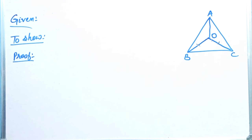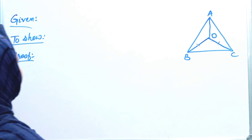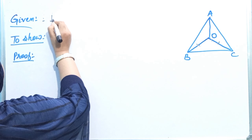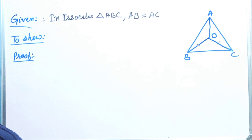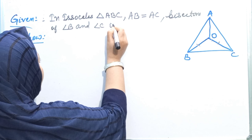So how do we prove it? First of all, we will write it down. In isosceles triangle ABC: AB equals to AC, and the bisectors of angle B and angle C intersect at O.